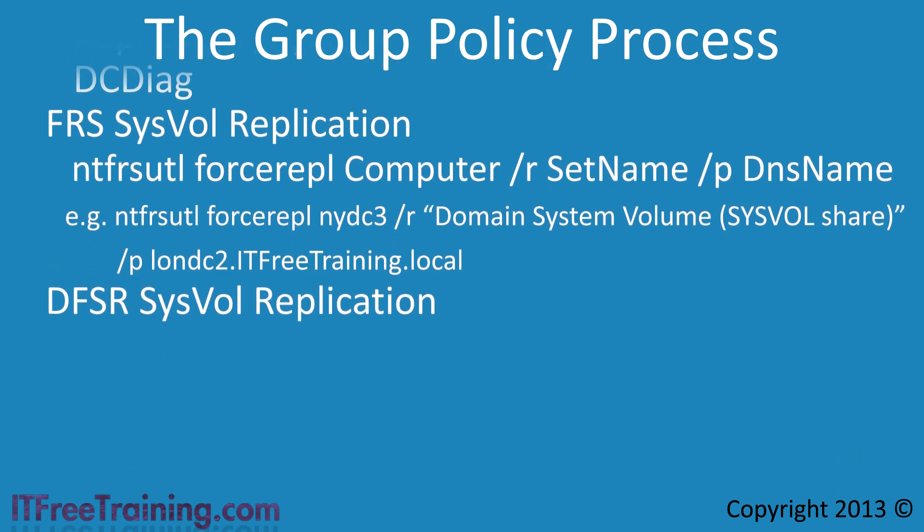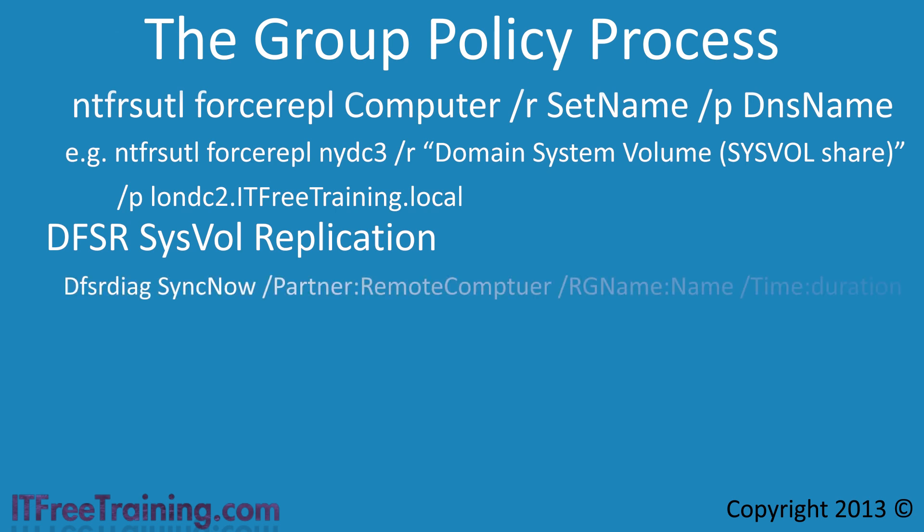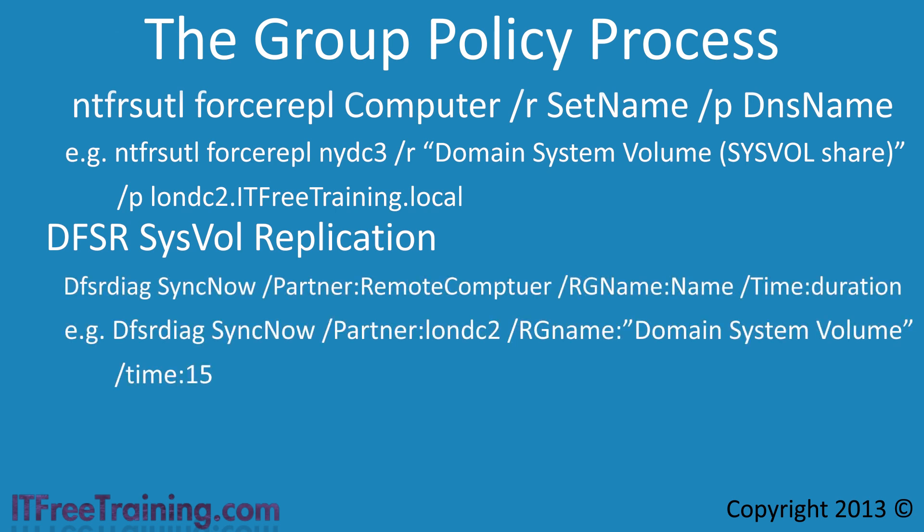If you are using DFSR to replicate the sysvol share, you will need to use the dfsrdiag command. The first parameter is SyncNow to indicate that a sync is to be performed. The next parameter is /partner: followed by the computer name you want to sync with. The next parameter /rgname indicates which data you want to sync — in this case colon Domain System Volume for the sysvol folder. The last parameter /time indicates how long to ignore the current replication schedule; in this case 15 minutes. If the replication is not done in 15 minutes, it will revert to the current replication schedule.